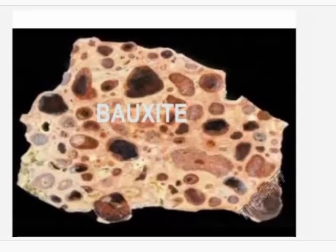Bauxite is used in the aircraft making industry, electrical industry, and is also used in making machines. Bauxite is used to make paper, purify water, and refine petroleum. It is also used to manufacture rubber and cosmetics. The bauxite deposits are mainly found in the Shevaroi Hills of Salem District, Tamil Nadu.